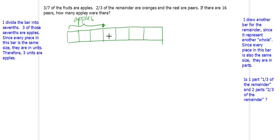These three units are apples. The remaining is these four units. Now this is the remainder, so 2/3 of the remainder are oranges. What I'm going to do here is I'm going to take this whole thing as the remainder.